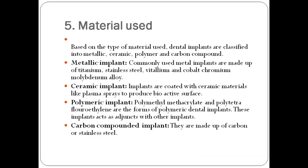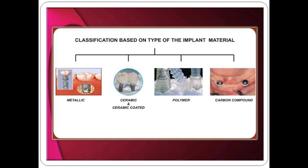Classification based on the type of material used: dental implants are classified into metallic implants, ceramic implants, polymeric implants, and carbon compound implants — also described as metallic, ceramic and ceramic-coated, polymer, and carbon compound, as shown in the diagram.